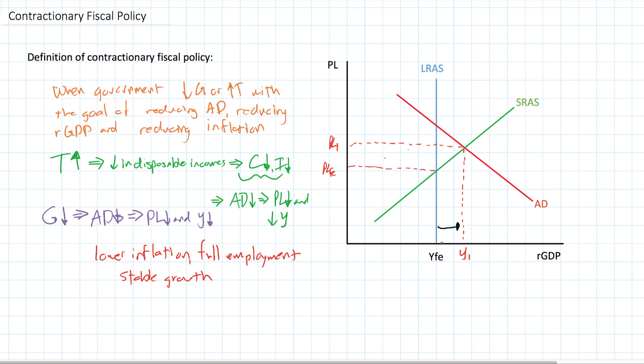The growth that the economy was experiencing as it went from YFE to Y1 was only short-term. This was short-run. We've talked about short-run growth versus long-run growth. This is not sustainable. Y1 is unsustainable.